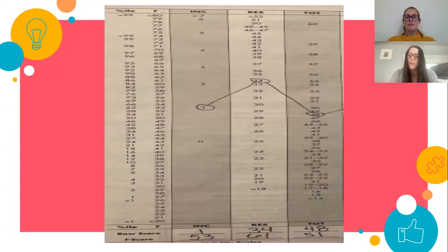Shown here is a small portion of a completed profile sheet. As mentioned prior, the circled numbers are the raw scores, each corresponding to a T-score. The numbers are located in the left margin. Plotting the T-scores, as shown, allows you to get a good idea if the individual's scores are in the normal range.